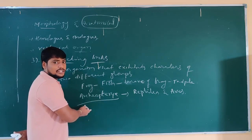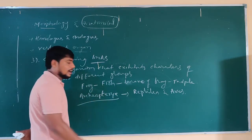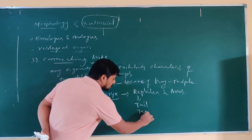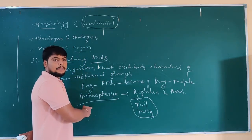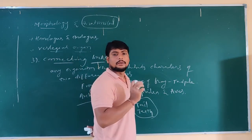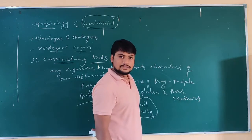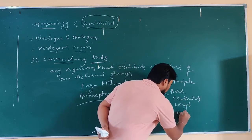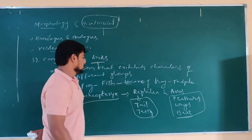Archaeopteryx consists of characteristics of both reptiles as well as aves. What are the characteristics of reptiles it shows? It exhibited a tail and also showed teeth — these two are characteristics of reptiles shown in Archaeopteryx. And it also shows aves, that is bird features — it consists of feathers and wings.